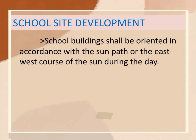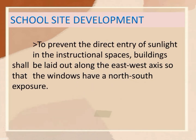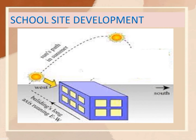Next, school buildings shall be oriented in accordance with the sun path or west course of the sun during the day. To prevent the direct entry of sunlight in the instructional spaces, buildings shall be laid out along the east-west axis so that the windows have a north-south exposure.